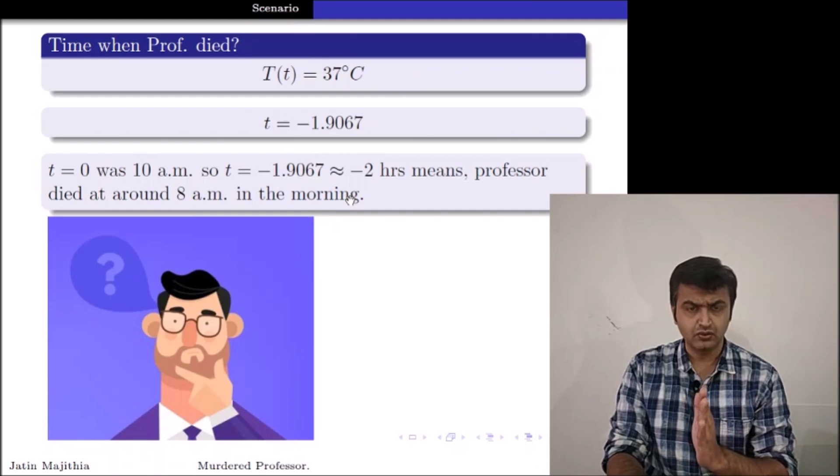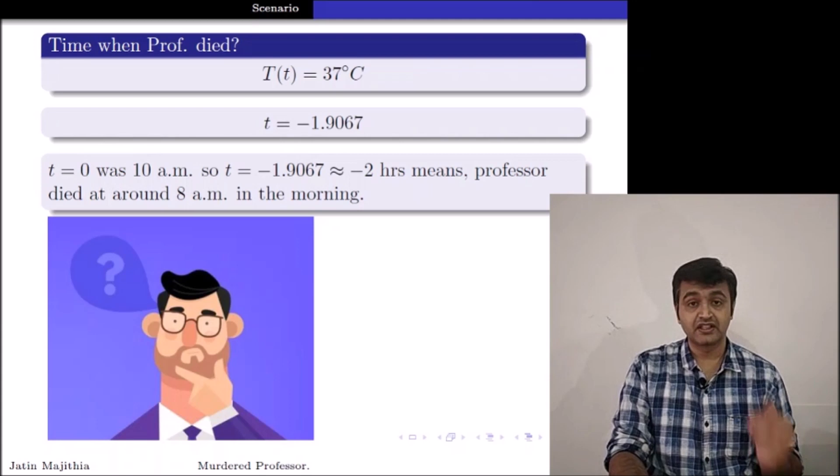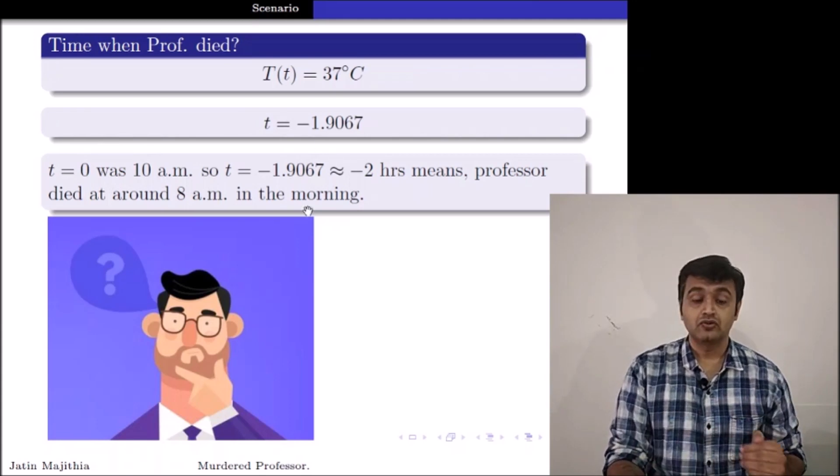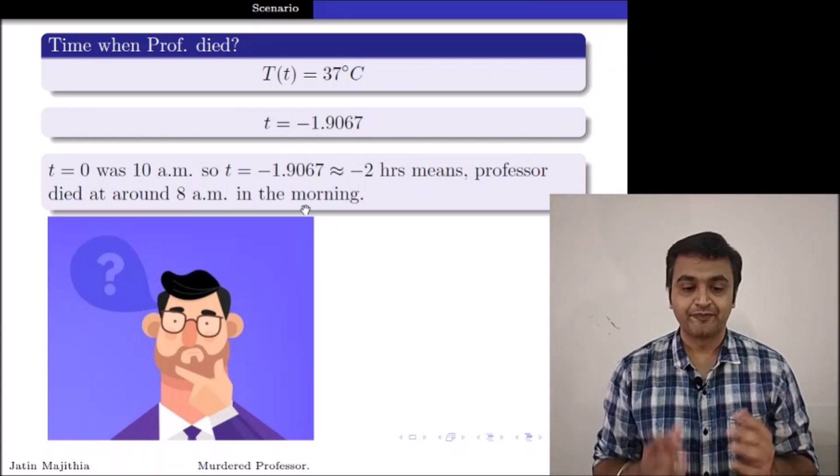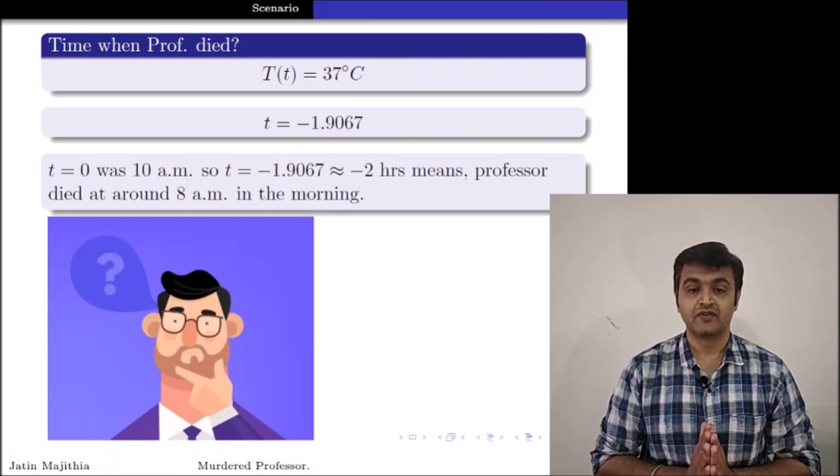It is coming out to be minus 2. So since T equal to 0 corresponded to 10 AM, so T equal to minus 2 will correspond to 8 AM. So thanks to Newton's law of cooling, you could calculate that the professor died at around 8 AM.